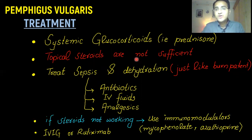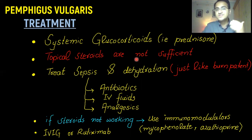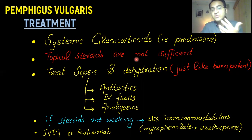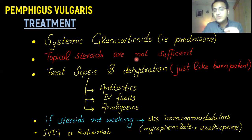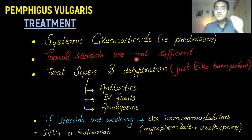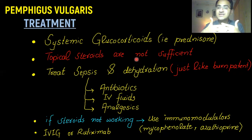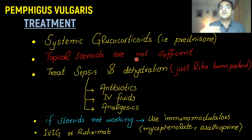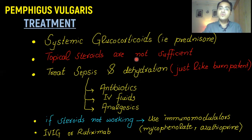If steroids are not working, since it is an autoimmune disease and you have to suppress the immune system, you can go for immunomodulators such as mycophenolate or azathioprine. In severe cases, IV immunoglobulins are also used — they bind the antibodies targeting the desmosomes and lower the antibody titer, resulting in improvement. Rituximab, a monoclonal antibody, is also used for the treatment of Pemphigus vulgaris in severe cases.